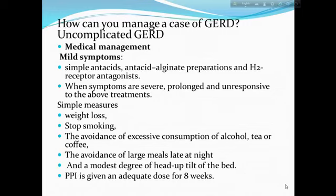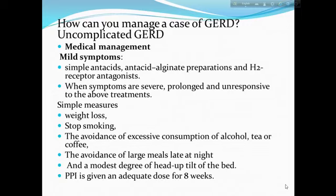In uncomplicated GERD, medical management is preferred. For mild symptoms: simple antacids, alginate preparation, and H2 receptor antagonists. When symptoms are severe, prolonged, and unresponsive to treatment, surgical intervention may be needed. Simple lifestyle measures include weight loss, stopping smoking, avoidance of excessive alcohol, tea or coffee, large meals late at night, and modest head-up tilt of the bed. PPI is given in adequate dose for 8 weeks.